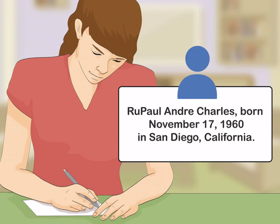A strong, detailed outline will work through key events chronologically. To outline a biography, start by discussing early life and childhood. Then go into adulthood and current life, or later life and death if the person is no longer alive.